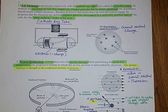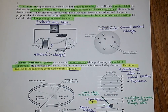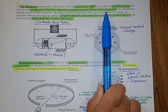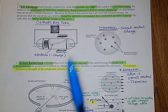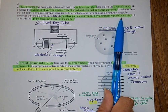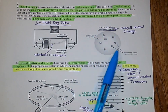Moving on, we have J.J. Thomson. Thomson did an experiment using cathode ray tubes, also called Crook's tube. He discovered the existence of very tiny negatively charged particles, which he called electrons. He determined that all atoms contain electrons, and since atoms have an overall neutral charge, he proposed that electrons are definite negative particles surrounded by a uniformly positive matrix. His model is called the plum pudding model.